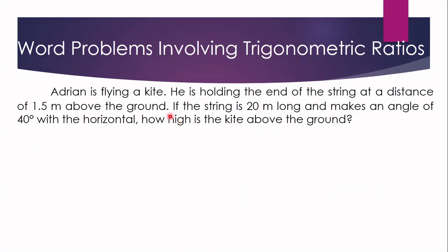Now for the last sample problem: Adrian is flying a kite. He is holding the end of the string at a height of 1.5 meters above the ground. The string is 20 meters long and makes an angle of 40 degrees with the horizontal. How high is the kite above the ground? We illustrate with a stickman representing Adrian holding the string, the kite above, and the horizontal line at the level of his hand.